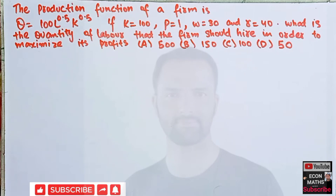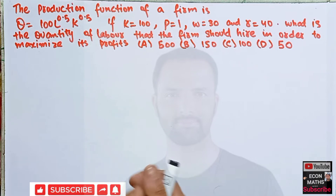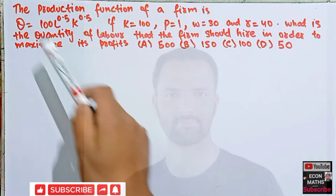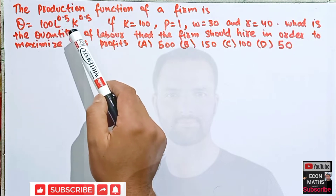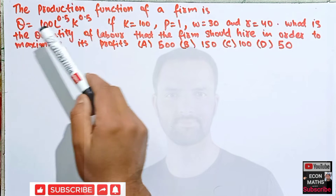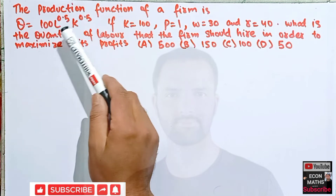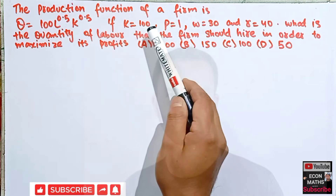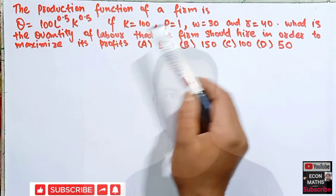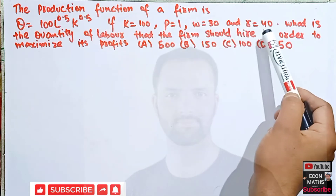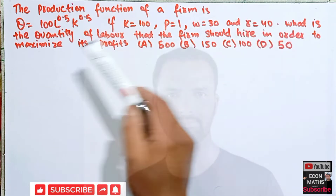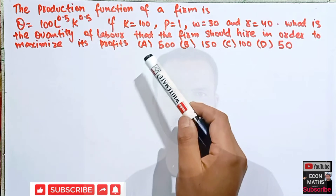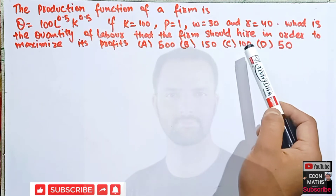Hi, this is Hilal. In this video on the mathematical economics series, we will try to solve a question on finding the profit-maximizing level of labor from a given production function. The production function of a firm is given by Q = 100 × L^0.4 × K^0.4, where Q is quantity, L is number of laborers, and K is units of capital. If K = 100 units, price is 1, wage rate is 30, and rental rate of capital is 40, what is the quantity of labor the firm should hire to maximize its profit? The options are 500, 150, 100, or 50.